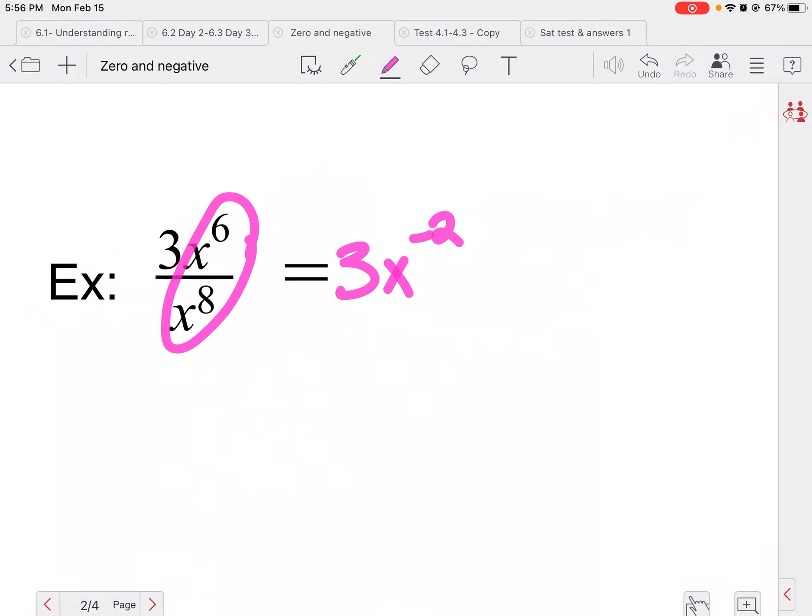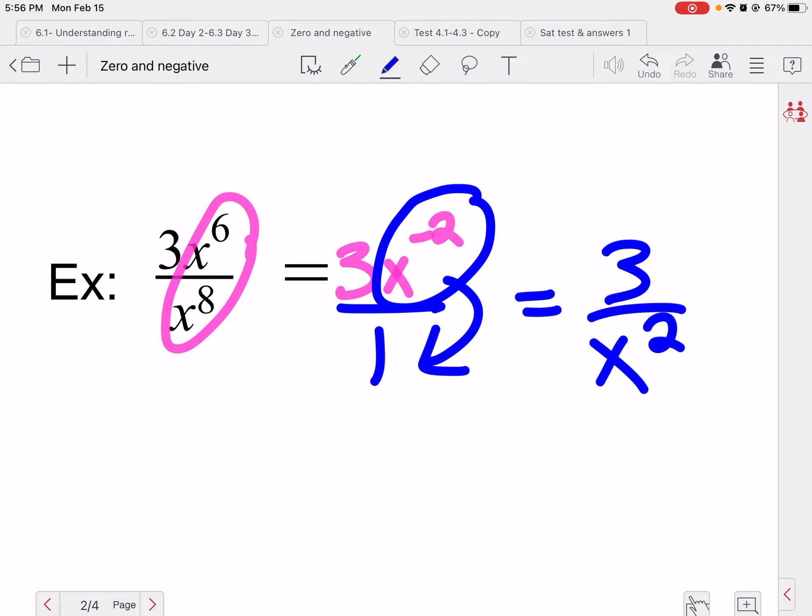All right, now this one, we have to do some extra work here. Well, I know from quotient rule that 6 minus 8 is negative two, so I'd have 3x to the negative two. But I know in the math world, we don't like negative exponents, so this is over one. And since the x has a negative exponent, it's going to move on down.